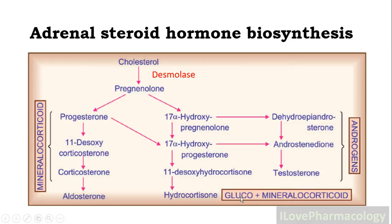The second pathway is the glucocorticoid and mineralocorticoid pathway, responsible for formation of hydrocortisone. From pregnenolone it gets converted to 17-alpha-hydroxypregnenolone, and also progesterone can be converted directly into 17-alpha-hydroxyprogesterone, later forming 11-deoxy-hydrocortisone to form hydrocortisone, which has got both glucocorticoid as well as mineralocorticoid activity.